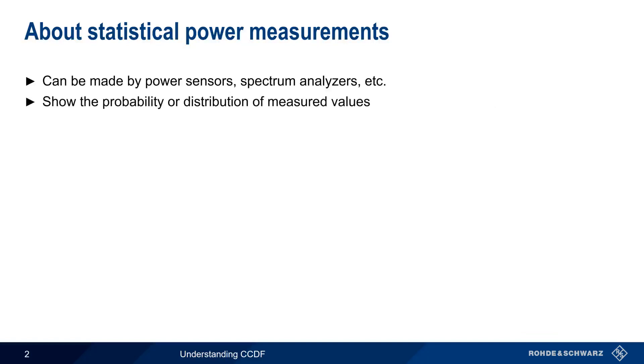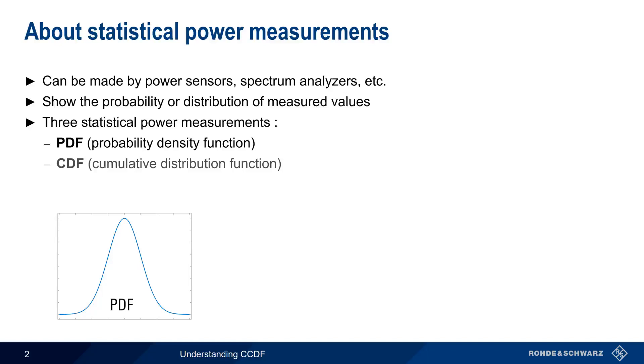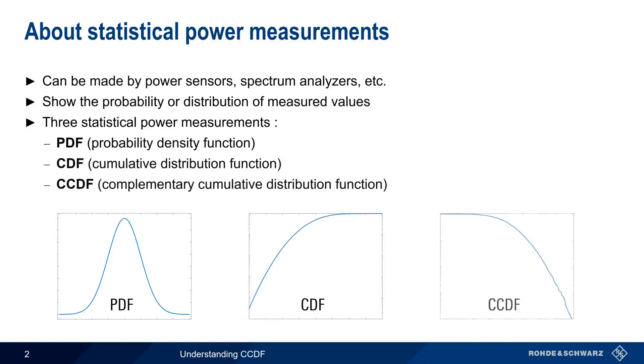These statistical measurements can show us the probability that the measured power takes on a certain value, or how the measured power values are distributed. Generally speaking, there are three primary statistical power measurements, namely the Probability Density Function, or PDF, the Cumulative Distribution Function, or CDF, and the Complementary Cumulative Distribution Function, or CCDF. Let's start by looking at the Probability Density Function.